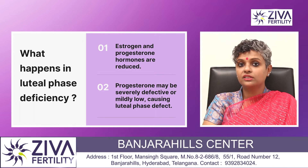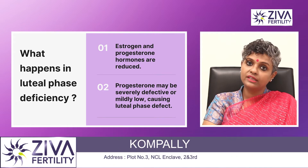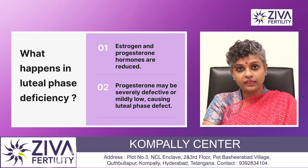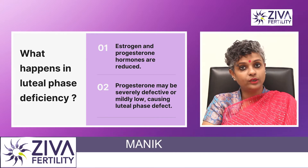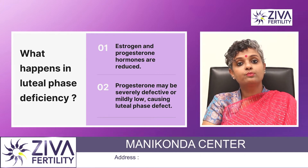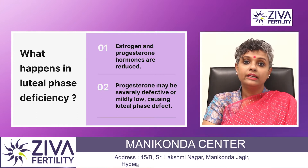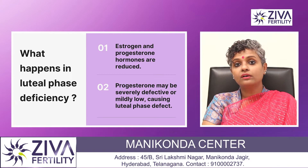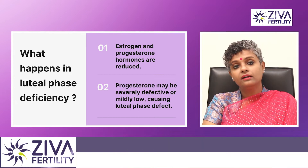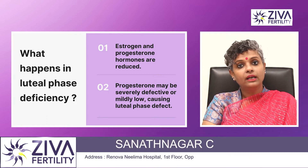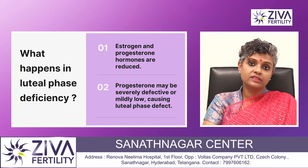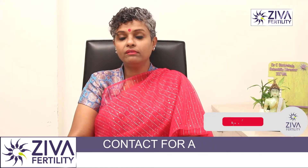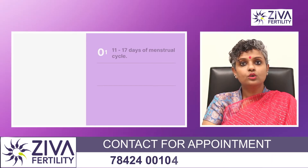So these two hormones play a very critical role. In a luteal phase deficiency or a luteal phase defect, these two hormones are definitely reduced. But the most important point to remember is that progesterone is either severely defective or mildly low, and that is causing a luteal phase defect or an improper endometrium, which is not helping you get pregnant.